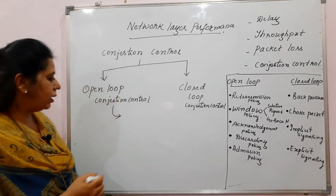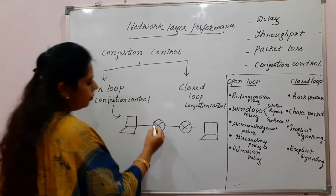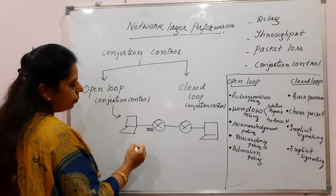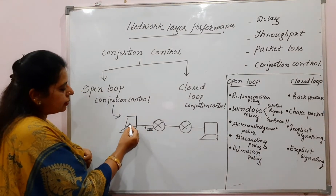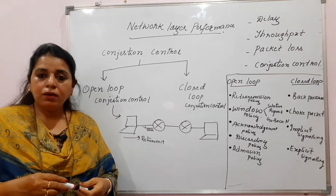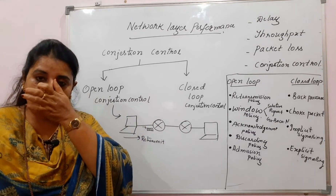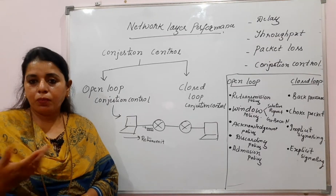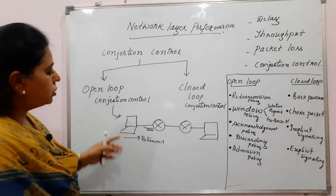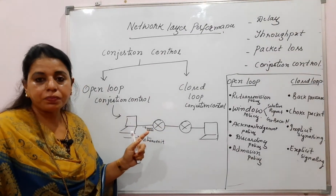The first is the retransmission policy. When a packet is dropped by a router — because its buffer is full — the sender retransmits since it receives no acknowledgement. However, retransmission itself generates more packets in the network, leading to more congestion. So the question is: can retransmission timers be redesigned to avoid contributing to congestion?